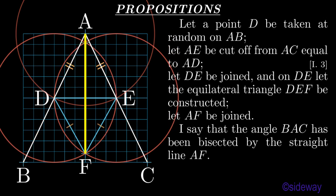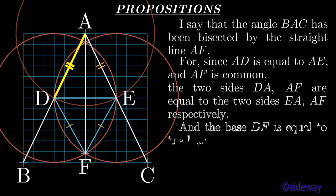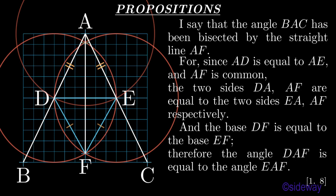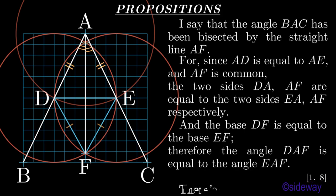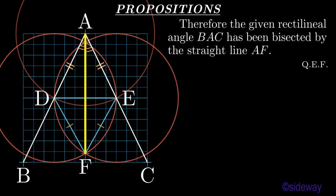I say that the angle BAC has been bisected by the straight line AF. For since AD is equal to AE and AF is common, the two sides DA, AF are equal to the two sides EA, AF respectively. And the base DF is equal to the base EF. Therefore the angle DAF is equal to the angle EAF, by Book 1 Proposition 8. Therefore the given rectilineal angle BAC has been bisected by the straight line AF. That which was to be done.